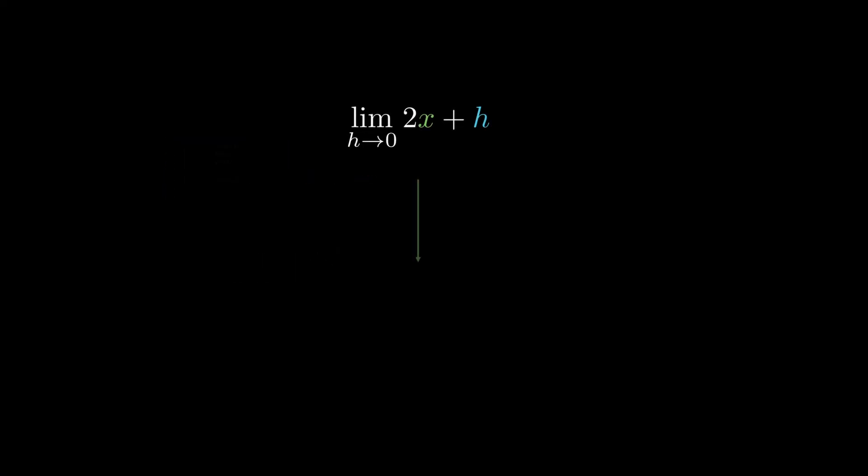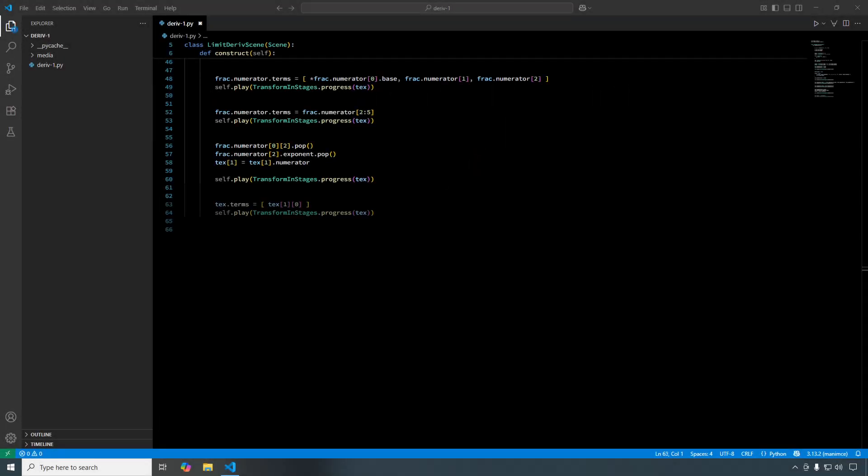Now we evaluate the limit, and we'll be left with 2x. We'll reconstruct the array of the root math text to contain only the 2x term. And with this last line, we have finished the code for the animation.